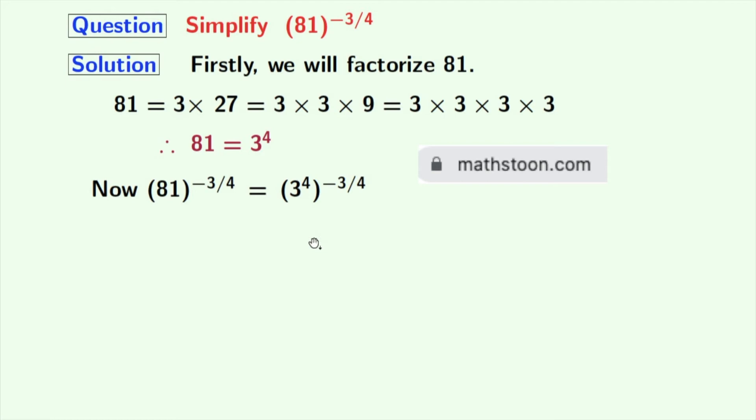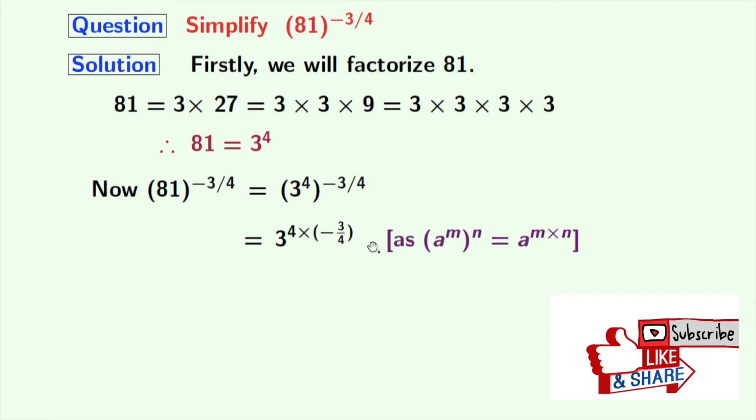We will rearrange this as 3 to the power 4 times minus 3 by 4. As we know that a to the power m, whole to the power n, is equal to a to the power m times n. Here a is 3, m is 4, and n is minus 3 by 4.